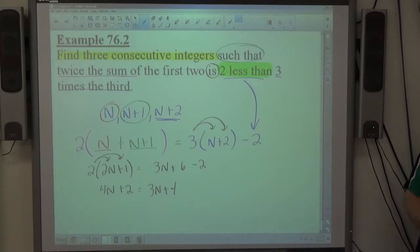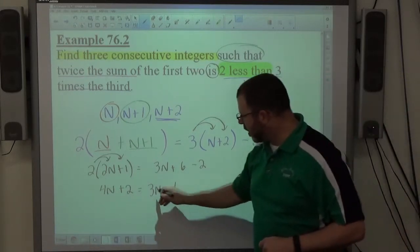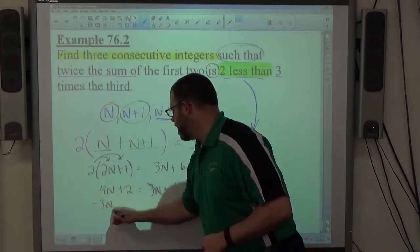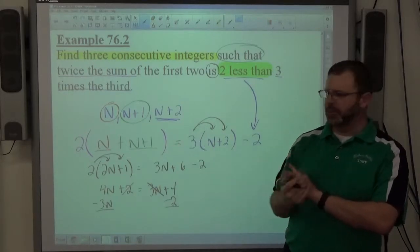So, four n plus two equals three n plus four. Left-hand, right-hand side are both as simple as possible. So now, if I just slide the three n over to the left and move the two over to the right, in both cases, changing a positive, moving cross equal sign to a negative.